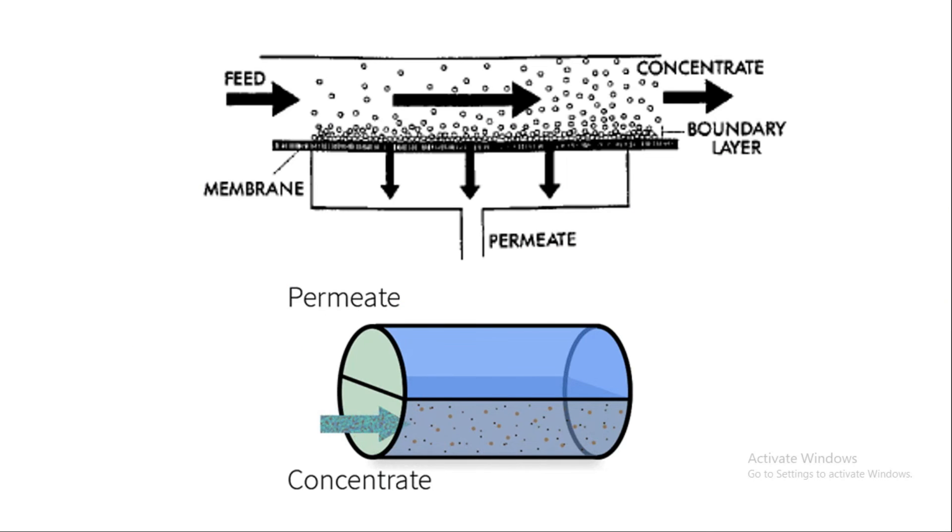Due to the continuous flow across the membrane surface, rejected particles do not accumulate but are instead swept away by the concentrate stream. Consequently, one feed stream is divided into two exit streams: the solution passing through the membrane surface and the remaining concentrate stream.